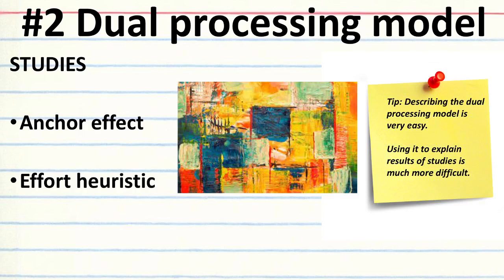What I would recommend with the dual processing model, here's a bit of word of caution. Describing the model is very easy. You simply talk about system 1 processing, system 2 processing, and you describe the 5 adjectives or a few adjectives for each: fast, intuitive, logical, rational. However, using the model to explain the results of studies is much more difficult and requires careful thinking.